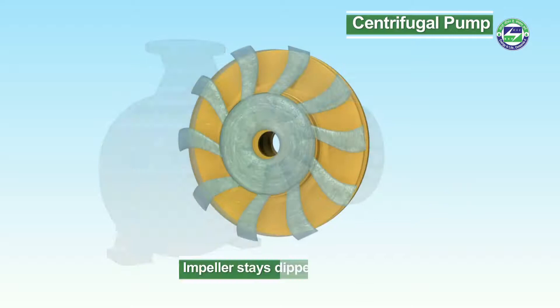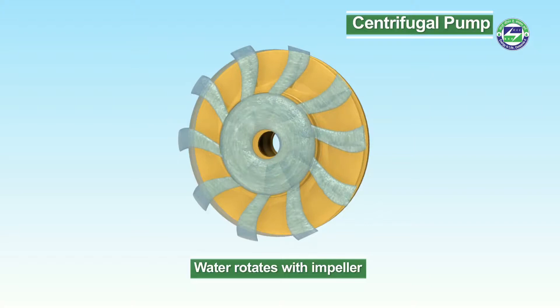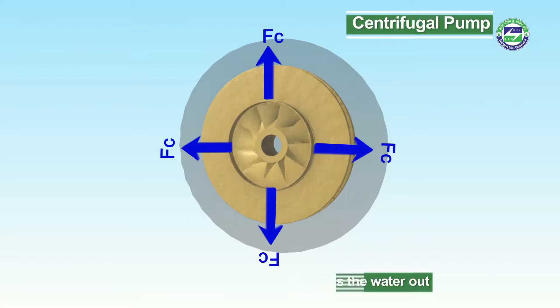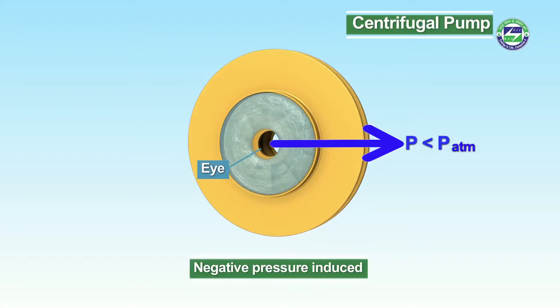The resulting centrifugal force makes the water move radially out. Due to water's displacement, a negative pressure is induced at the eye. This negative pressure helps in sucking a fresh water stream into the system. Thus, the process continues.